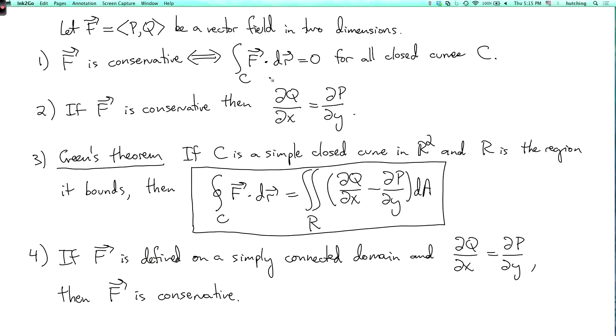So we know that if F is conservative then dQ/dx equals dP/dy, and that's true no matter what the domain is. And if you want to go the other way, you can't always do that, but you can always do that if the domain is simply connected.